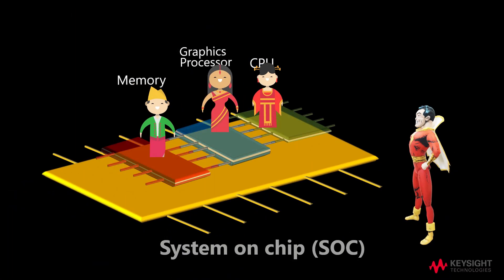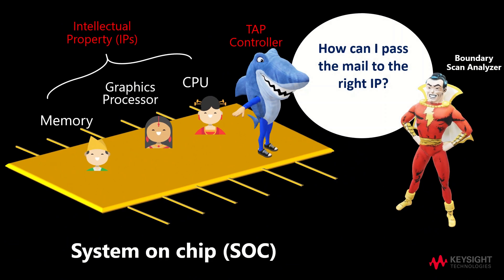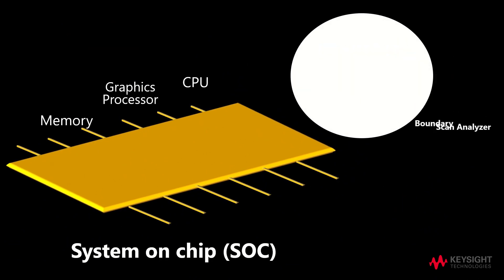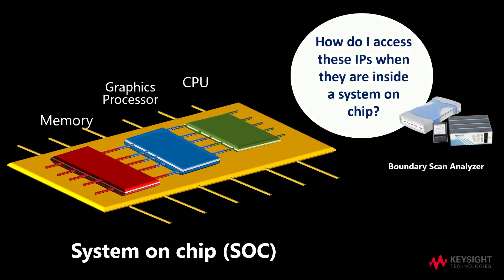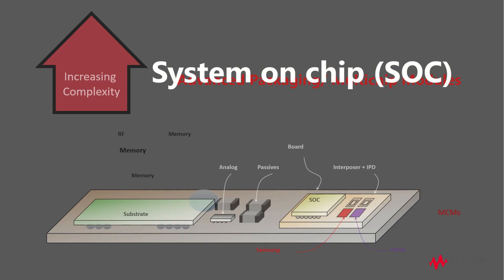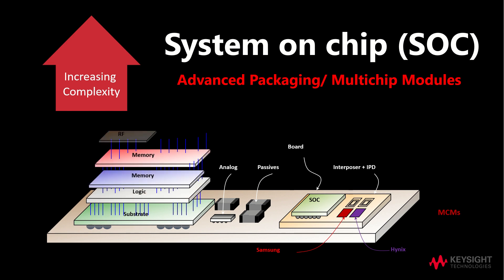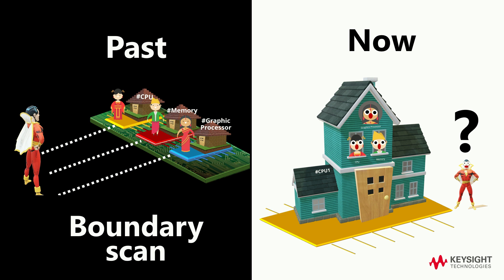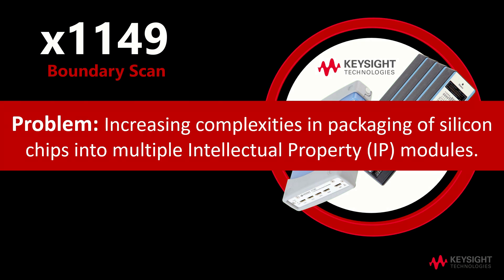The main issue from this illustration is how the boundary scan analyzer can pass the mail to the right IP. Similarly, from the perspective of the boundary scan analyzer, the main issue is how the IPs can be accessed in a system-on-chip. In a nutshell, with increasing complexities in packaging of silicon chips into multi-level IP modules, structural testing is becoming more complex. When each IP used to be a separate chip in the past, it would ensure accessibility for testing the various interconnects on the PCBA. But with the IPs bundling into the same IC package, it is like multiple chips being dissolved into a single package with limited to no access to these functional blocks. Structural testability of these blocks would obviously pose limitations. Hence, the main problem lies in the increasing complexities of the packaging of silicon chips into multiple intellectual property modules.